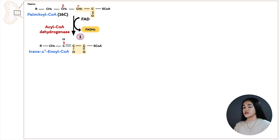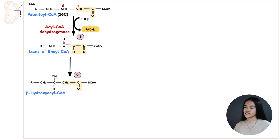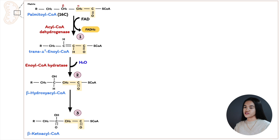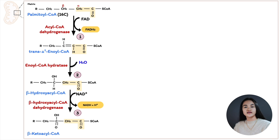In the second step, enoyl-CoA is converted to beta-hydroxyacyl-CoA. In this step, we add water to the double bond — a hydration reaction catalyzed by enoyl-CoA hydratase. Then in the third step, another dehydrogenation reaction forms beta-ketoacyl-CoA. In this reaction, NAD+ accepts the electrons and is reduced to NADH, another important electron carrier that will transfer these electrons to the electron transport chain. The enzyme catalyzing this reaction is beta-hydroxyacyl-CoA dehydrogenase.